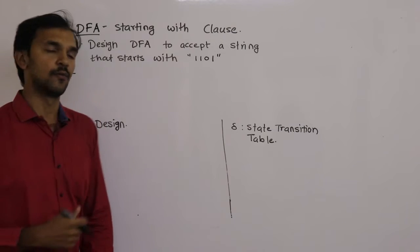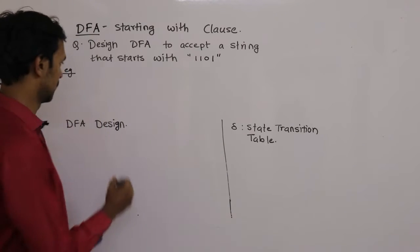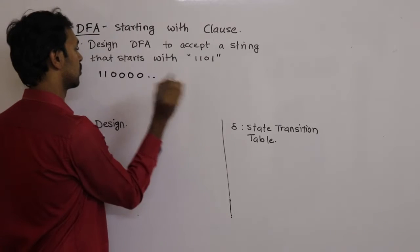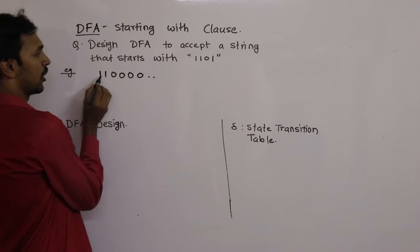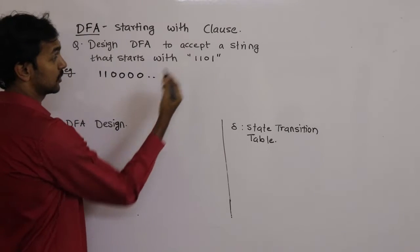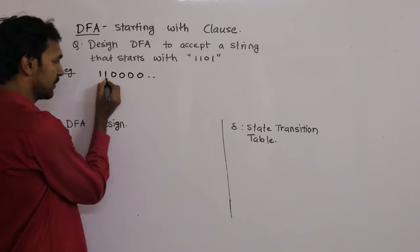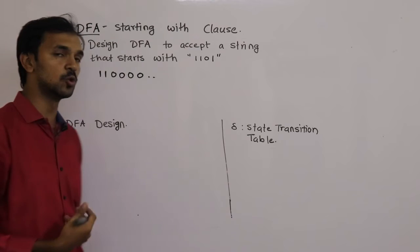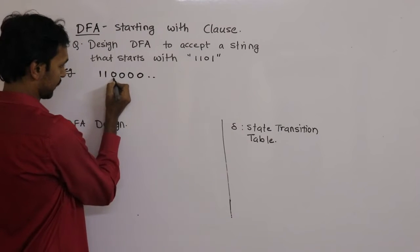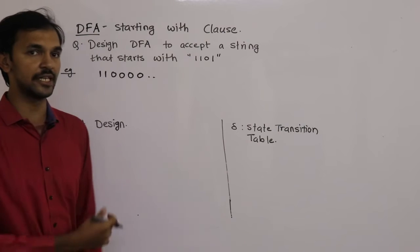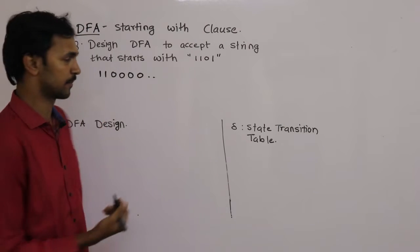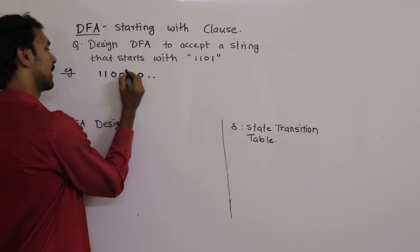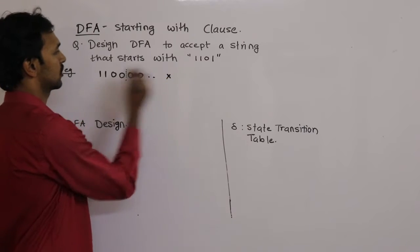Let's first understand which strings are acceptable and which are not. Take the example 11000. When you see the 1st bit, you wait. After 3 bits, you observe those bits are correct. After seeing the 4th bit, which is a mismatch, you conclude that this particular string is not acceptable as it is not starting with 1101.